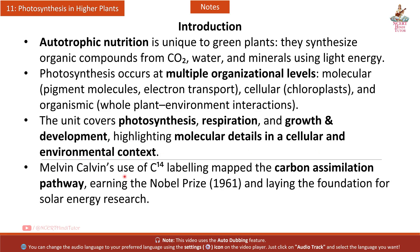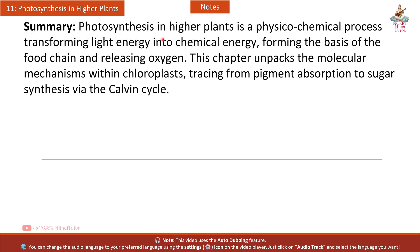Melvin Calvin's use of C14 labeling mapped the carbon assimilation pathway, earning the Nobel Prize in 1961 and laying the foundation for solar energy research. Photosynthesis in Higher Plants is a physico-chemical process transforming light energy into chemical energy, forming the basis of the food chain and releasing oxygen. This chapter unpacks the molecular mechanisms with chloroplasts, tracing from pigment absorption to sugar synthesis via the Calvin cycle.